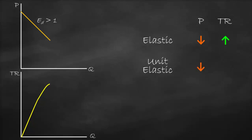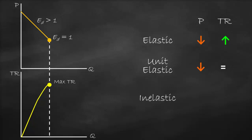At the unit elastic point, if we decrease price, total revenue will remain the same. Here, price elasticity of demand equals one, which means unit elastic, and this point gives us our maximum total revenue.